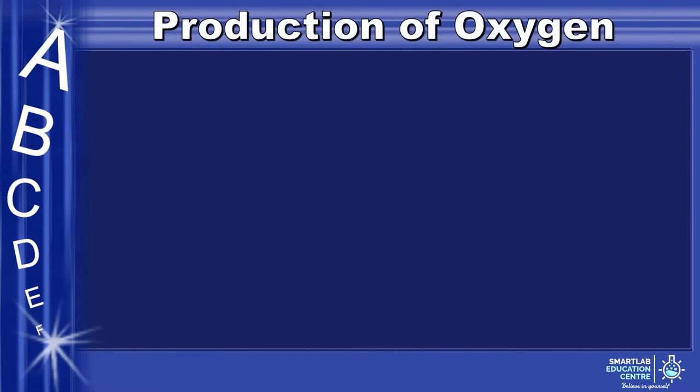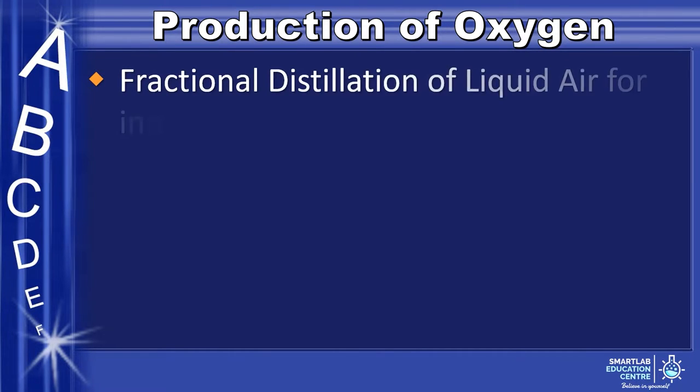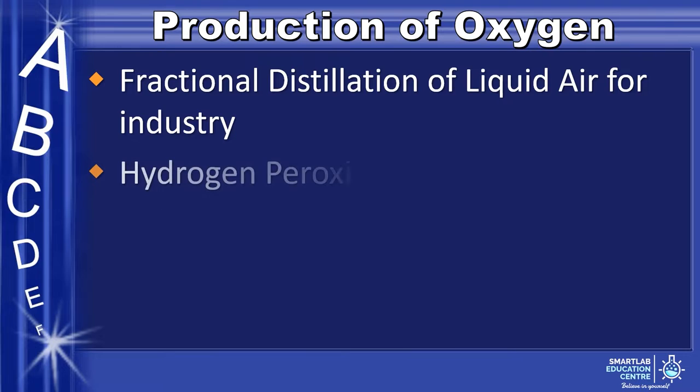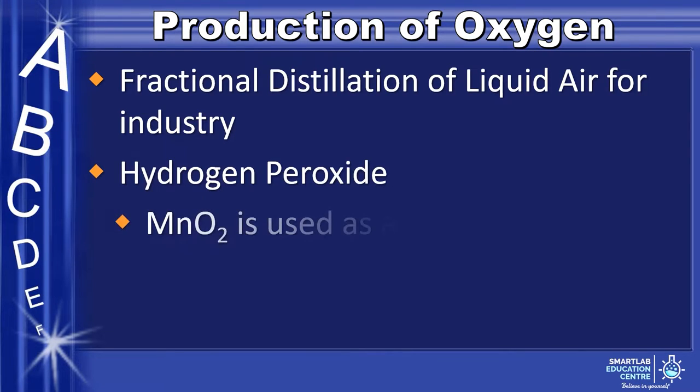In the production of oxygen, fractional distillation of liquid air can be used, as well as using hydrogen peroxide, where manganese oxide is used as a catalyst.